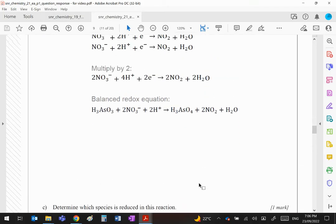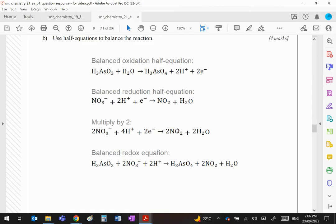The species that's reduced effectively obviously is the nitrate ion. You can see there it's gaining electrons. Also you could look at it from the point of view: the oxidation number of nitrogen is plus five there and plus four there. The drop in oxidation number means reduction.